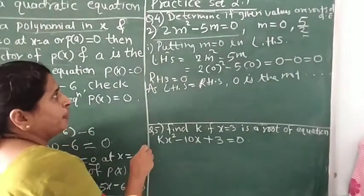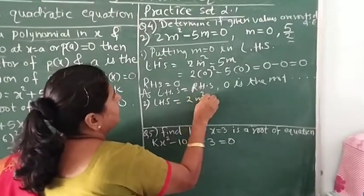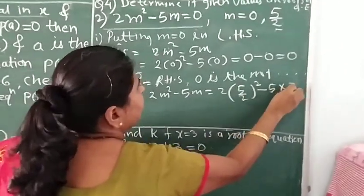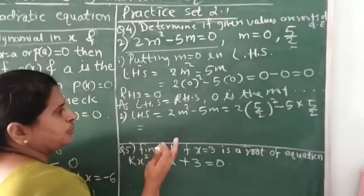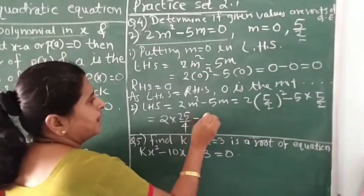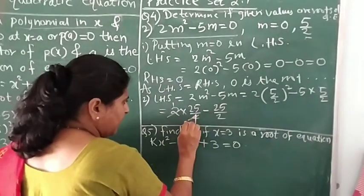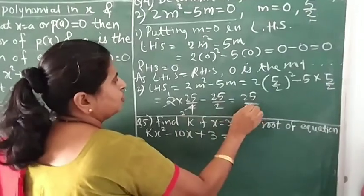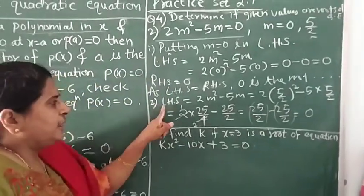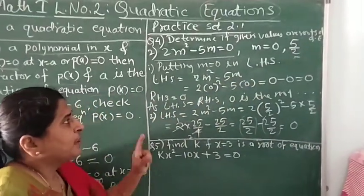Similarly, putting m = 5/2: LHS = 2×(5/2)² − 5×(5/2) = 2×(25/4) − 25/2 = 25/2 − 25/2 = 0. Since LHS = 0 = RHS, the value 5/2 is also a root of the given quadratic equation.